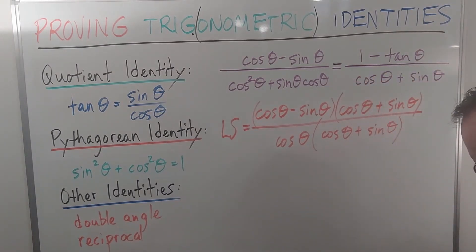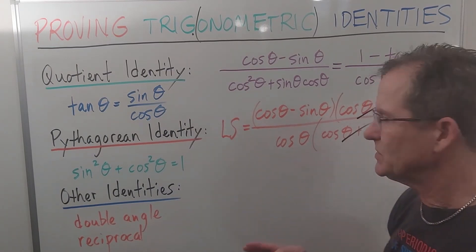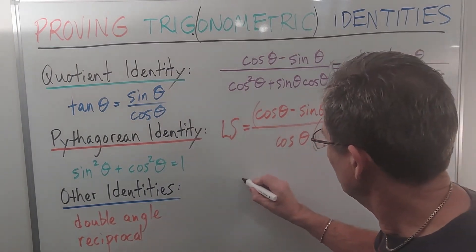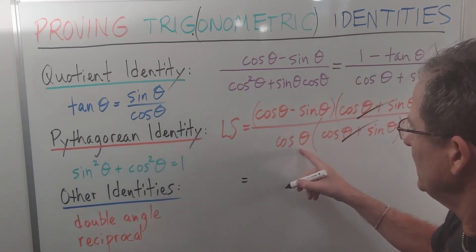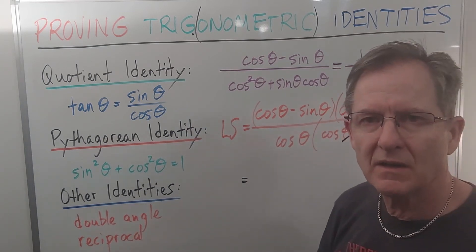Right off the bat, you should be able to see that these will cancel. Keeping in mind the restrictions, because you can't divide by zero. So, I'm going to end up with cos θ minus sin θ over cos θ.